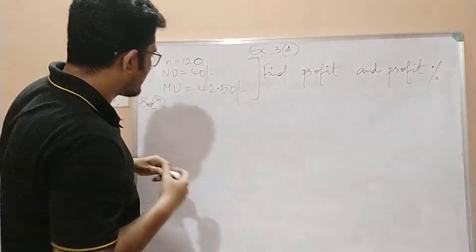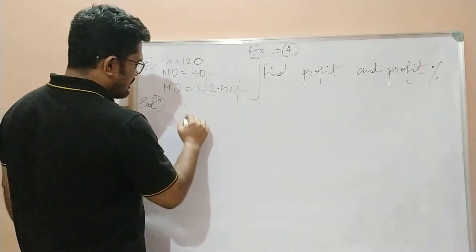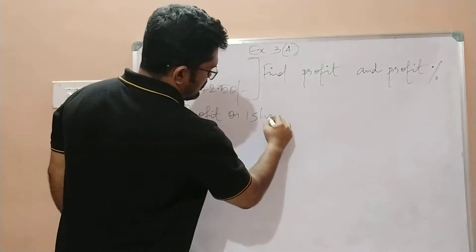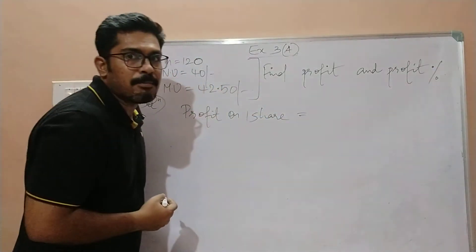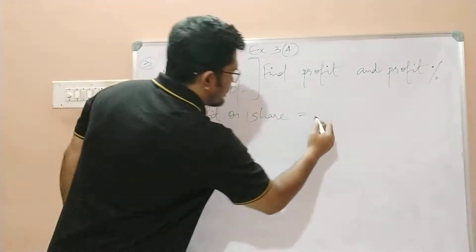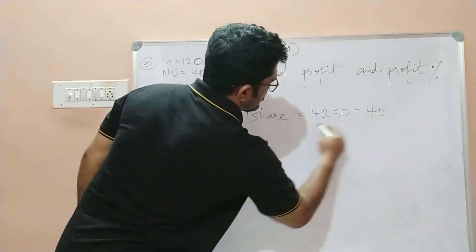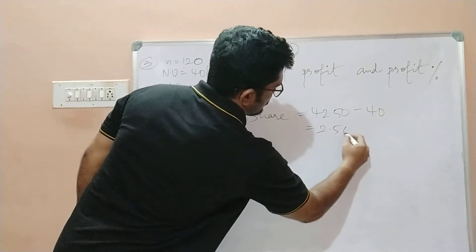So children, here the profit made on one share - please don't write one apple here - on one share is equal to 42 rupees 50 paise minus 40 rupees, which is equal to 2 rupees 50 paise.